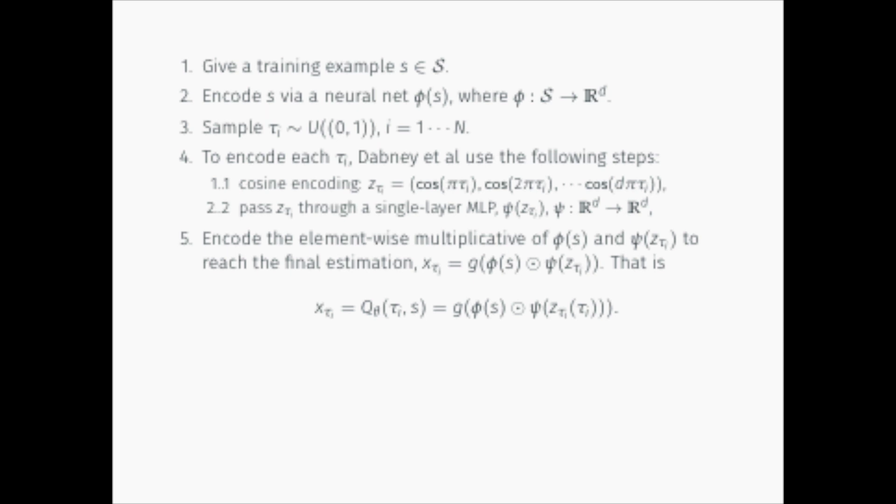Combine the embedding of S and tau through element-wise multiplication. The product goes through another MLP g to reach the final estimation.